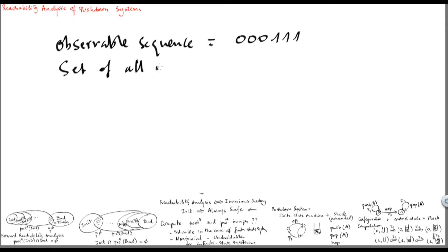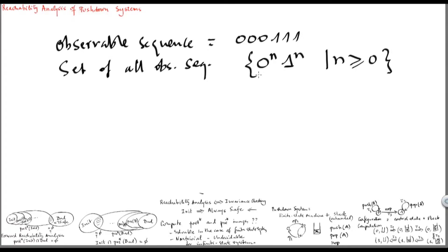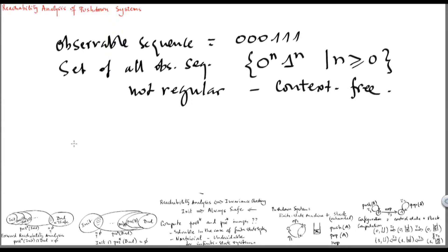The set of all observable sequences is the set of 0 repeated n times followed by 1 repeated n times, for any natural number n. This language is not regular — it cannot be defined by a finite state automaton — but it's context-free. However, in what follows we are not going to consider the set of observable sequences, but rather the set of reachable configurations.